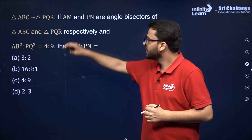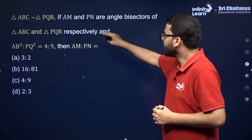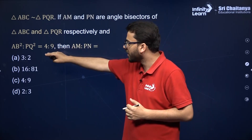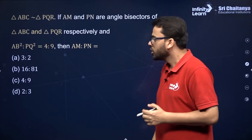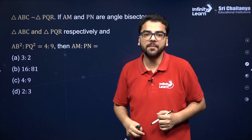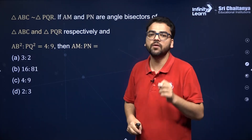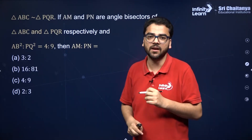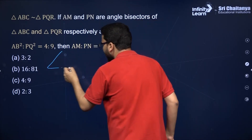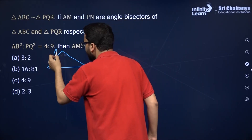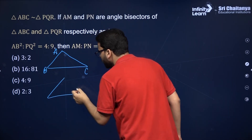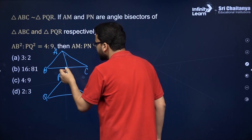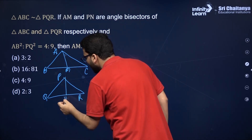Triangle ABC is similar to triangle PQR. AM and PN are angle bisectors of triangles ABC and PQR respectively. We need to find AM upon PN. This is a property worth remembering: the ratio of corresponding angle bisectors of two similar triangles equals the ratio of their corresponding sides.